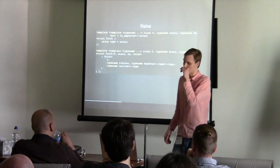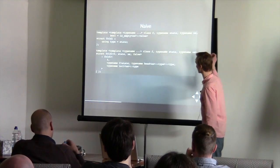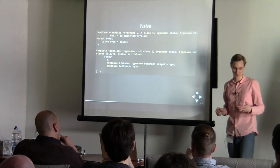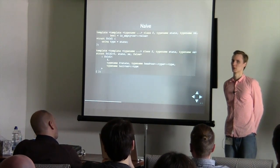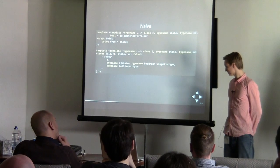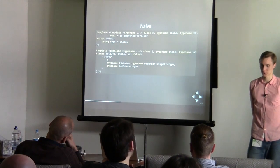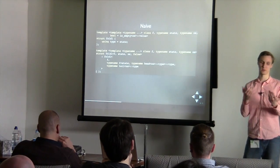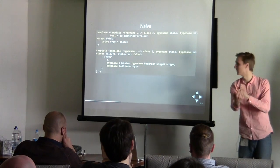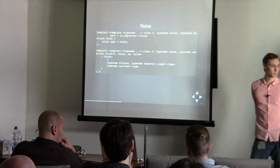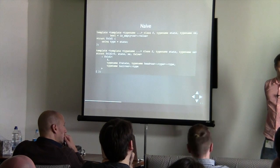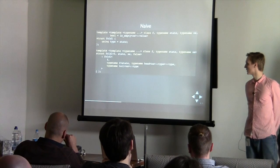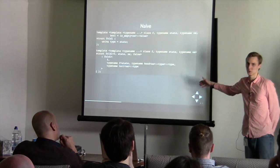For left folding: naive implementation. If the sequence is empty, just return the initial state. If it's not empty, apply the metafunction to the state and the first element in the list, then do this recursively with the tail of the list. So this is a naive recursive implementation of left fold — exactly the same as the MPL fold.